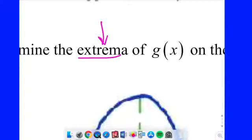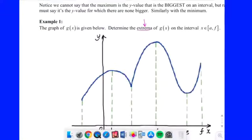We want you to determine the extrema of G on the closed interval from A to F. Now, the first thing is you've got to understand what the instructions are asking me. When it says to find the extrema, does that mean maximums or minimums? Both. Good. Does it mean Y values or X values? The Y values, right? Now, if you want to, you can go ahead and give the location. I'll do that as well.